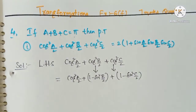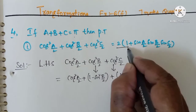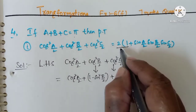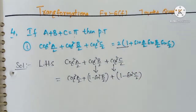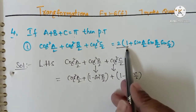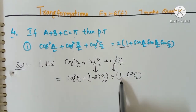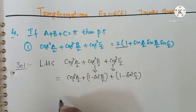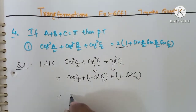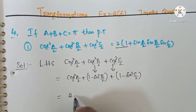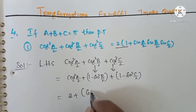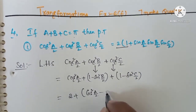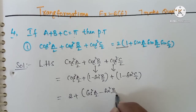Now observe the RHS: 2 into 1 plus 2 sin a by 2 sin b by 2 sin c by 2. So first we write this as 2 plus 1 plus 1, and then regroup as: 1 plus 1, plus 2, plus cos squared a by 2 minus sin squared b by 2.